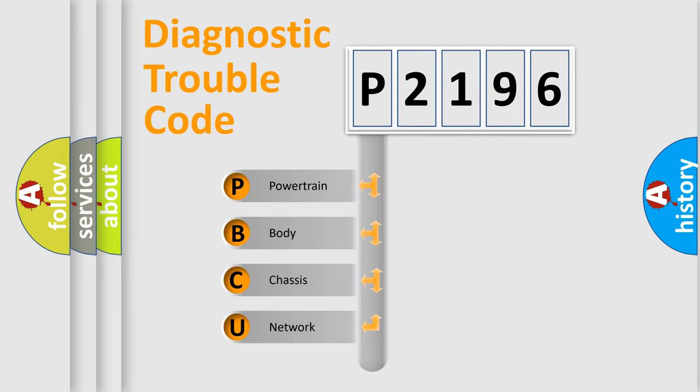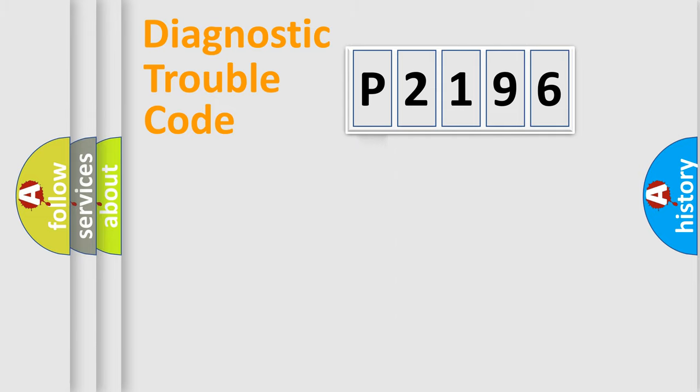We divide the electric system of automobile into four basic units: Powertrain, Body, Chassis, Network. This distribution is defined in the first character code.